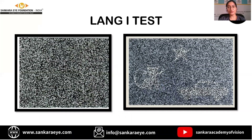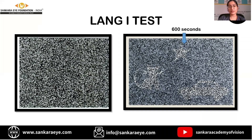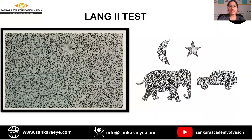The Lang test is very useful in children because it contains pictures and does not require any glasses. The left side of the image shows the Lang one test viewed monocularly and the right side shows a simulation of the test viewed binocularly. In this, the star corresponds to 600 seconds of arc, the cat corresponds to 1200 seconds of arc, and the car corresponds to 550 seconds of arc. The Lang two test is slightly different in that there is a star which can be appreciated monocularly, and it helps to measure stereo acuity up to 200 seconds of arc.